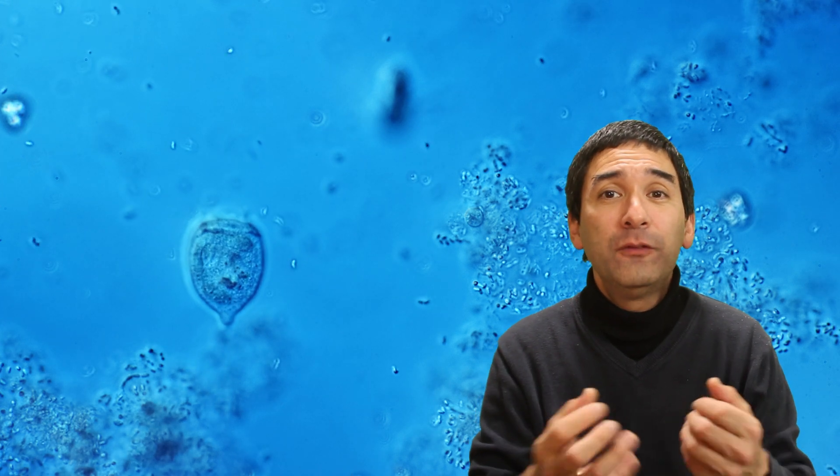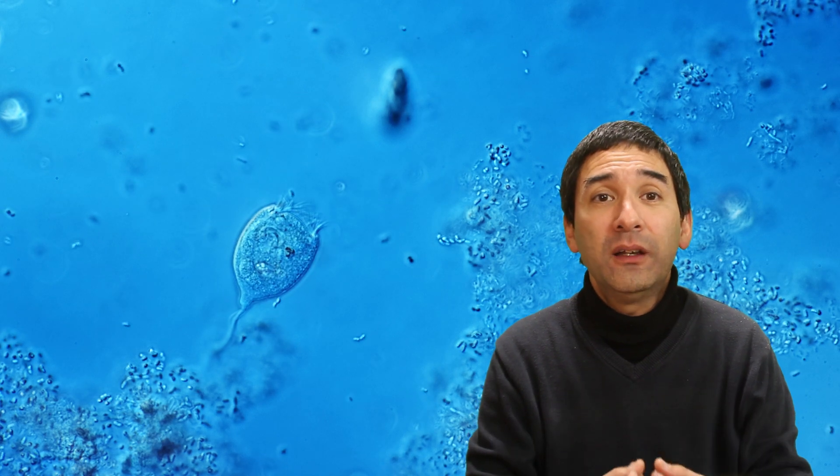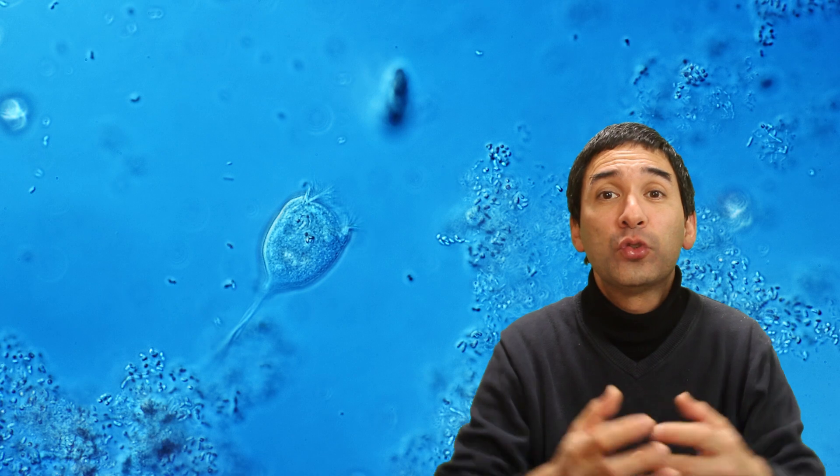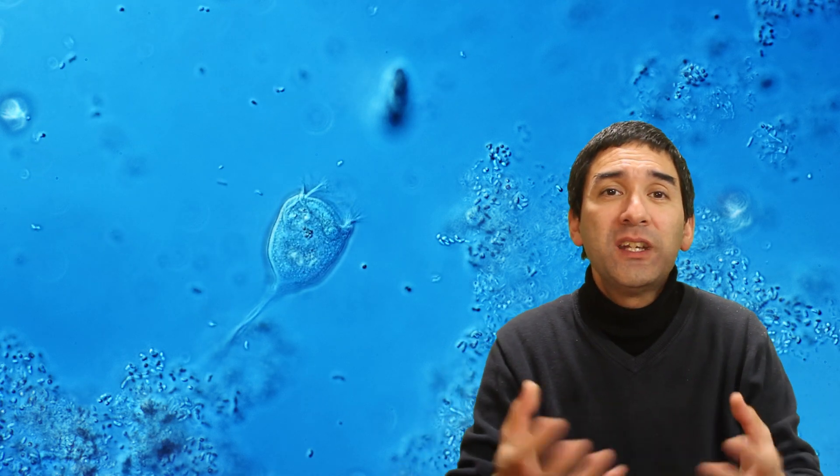Now, both paramecium and vorticella, they feed on bacteria to survive. They use their little cilia, their little hairs, on the surface to create a water current that brings bacteria and other small particles towards them.